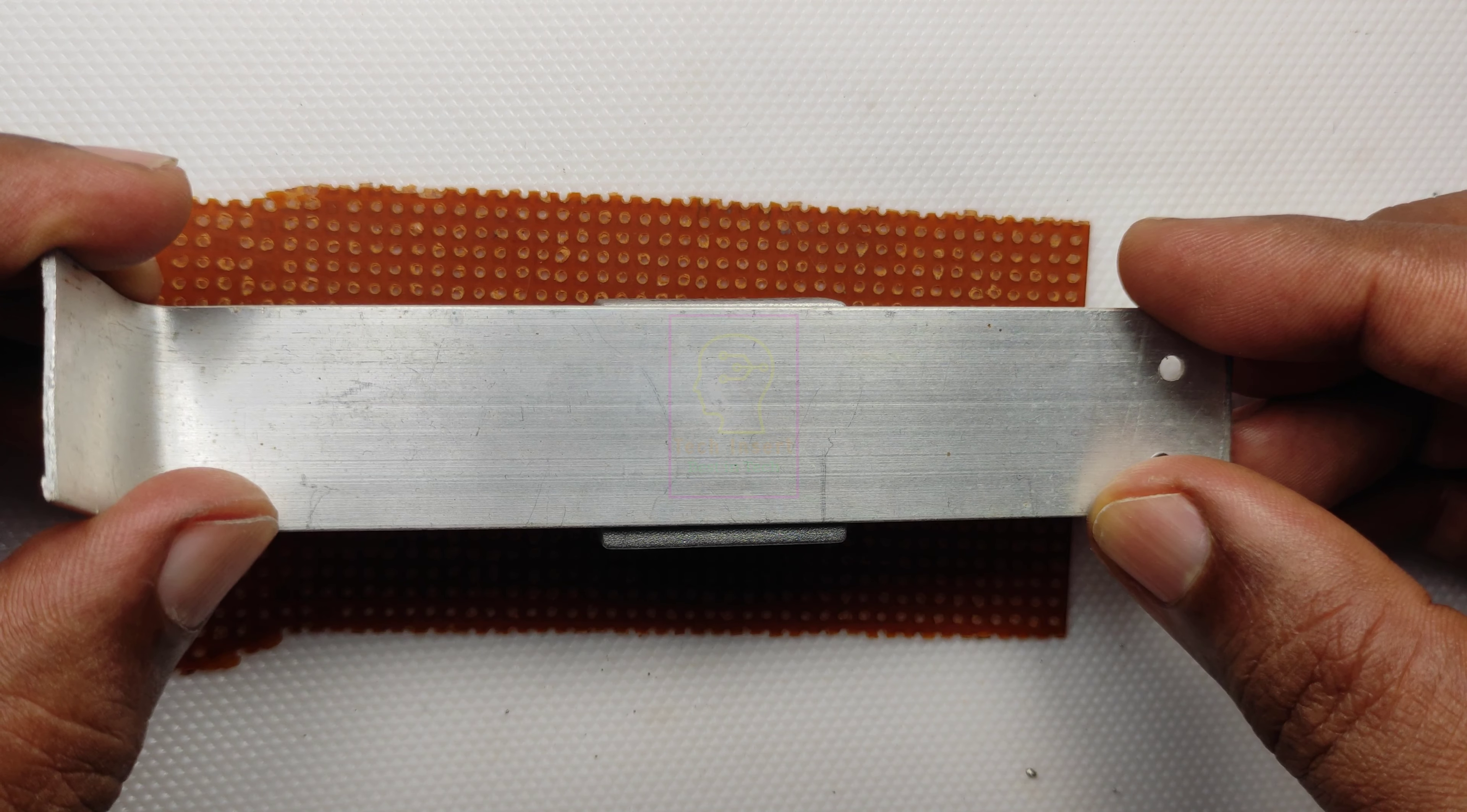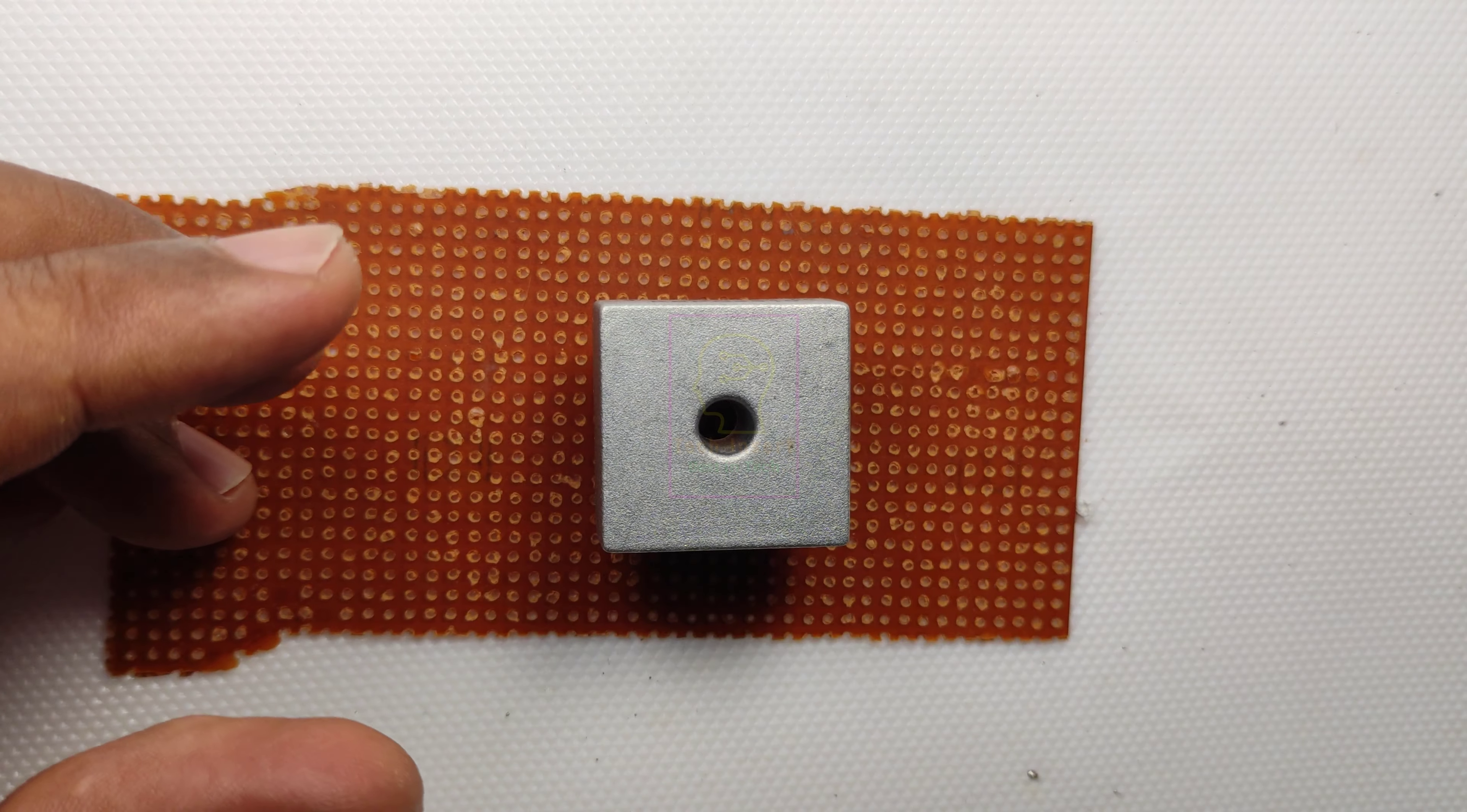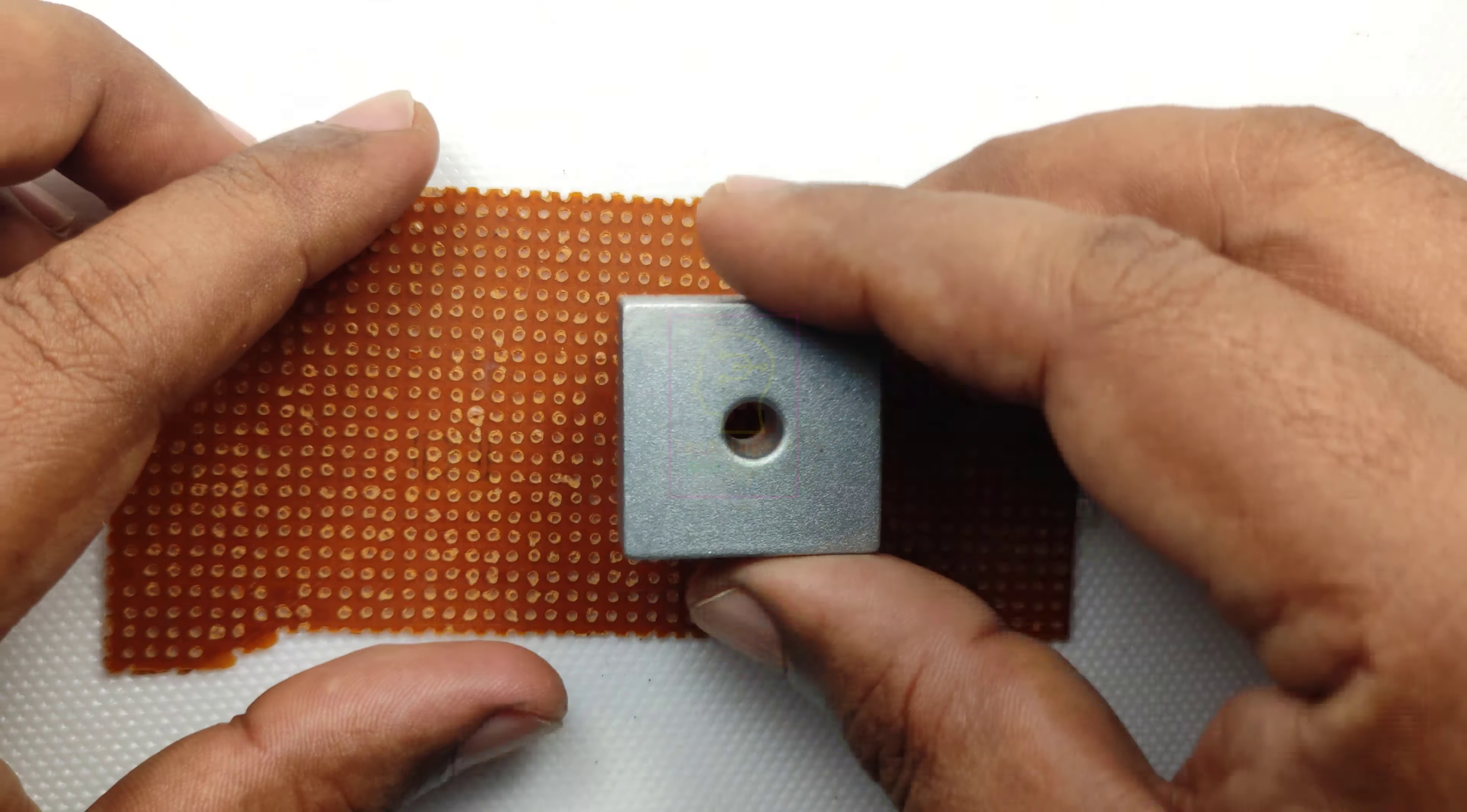If you are fixing the heatsink in the bridge rectifier, then fix the heatsink before you fix the bridge rectifier in the PCB. After fixing the heatsink, you fix the bridge rectifier in the PCB and solder it.